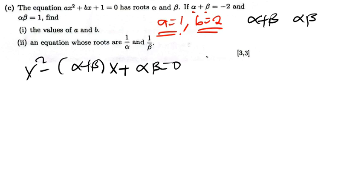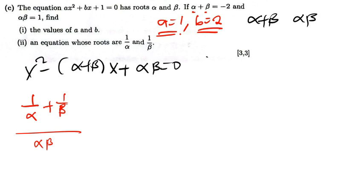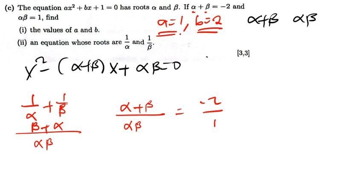To find the sum, we compute 1 over alpha plus 1 over beta. Finding the common denominator gives us (beta + alpha) over (alpha times beta). Rearranging, that's alpha plus beta divided by alpha times beta. We've been given alpha plus beta equals negative 2 and alpha times beta equals 1, so the sum is negative 2 over 1, which equals negative 2.